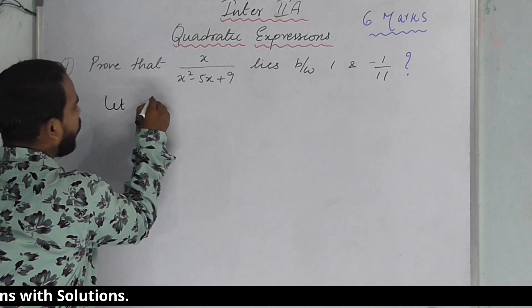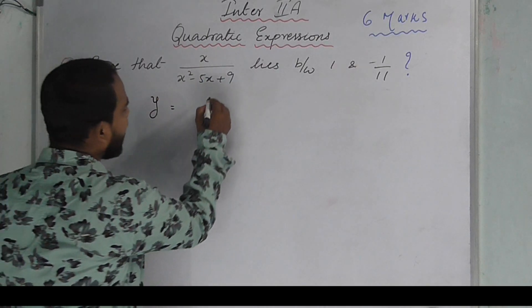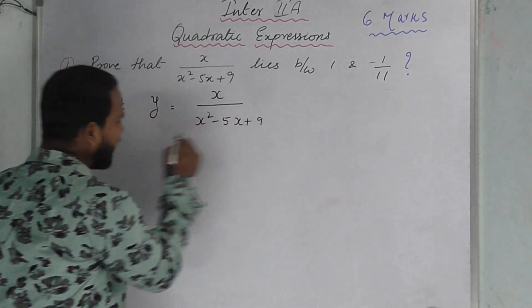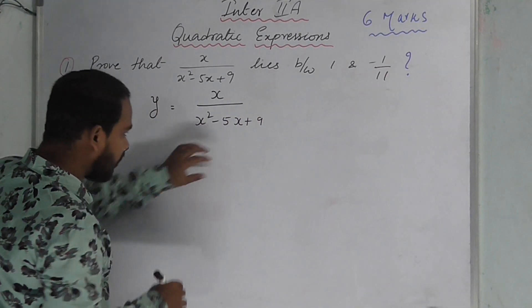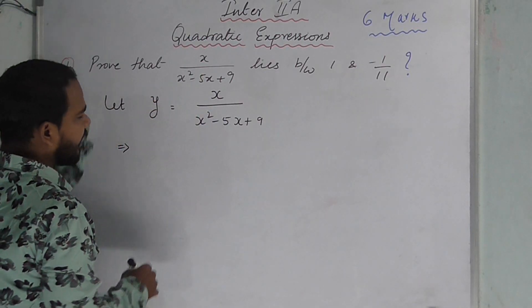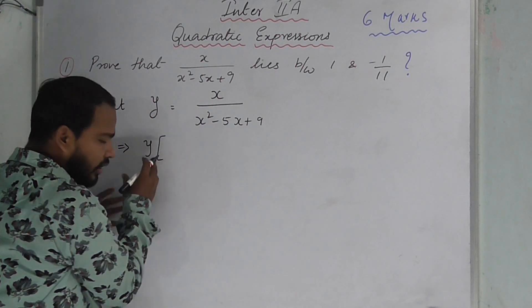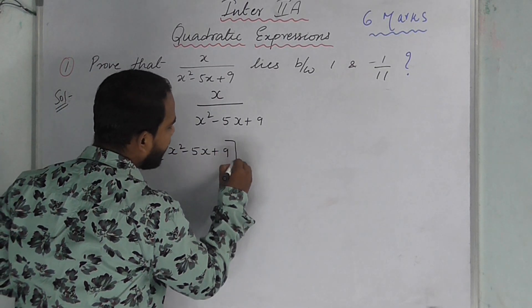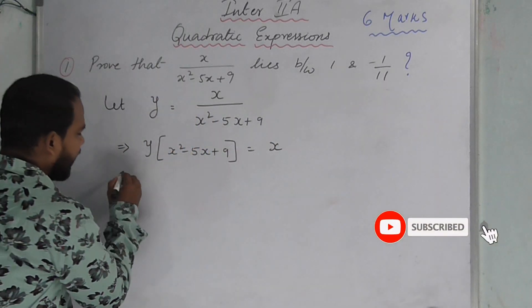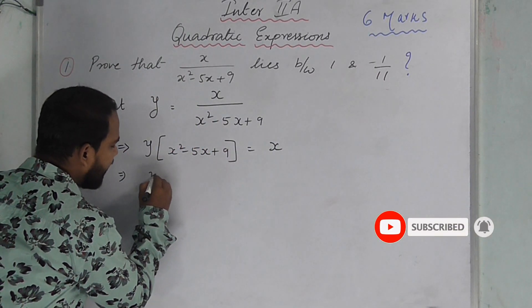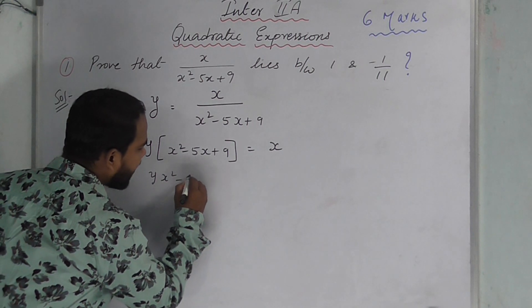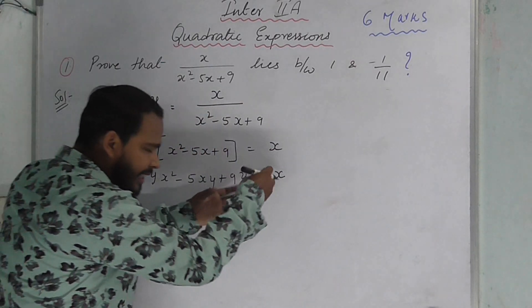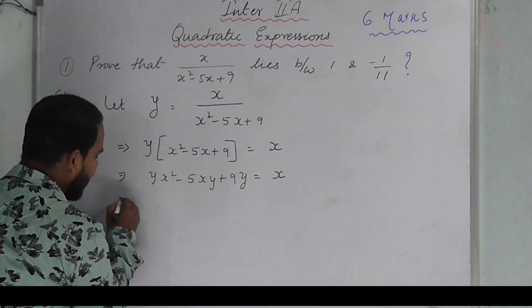y equals x squared minus 5x plus 9, divided by x. Taking this to the left-hand side and multiplying, we get: x squared minus 5x plus 9 equals x times y. Multiplying out: x squared minus 5xy plus 9y equals x.